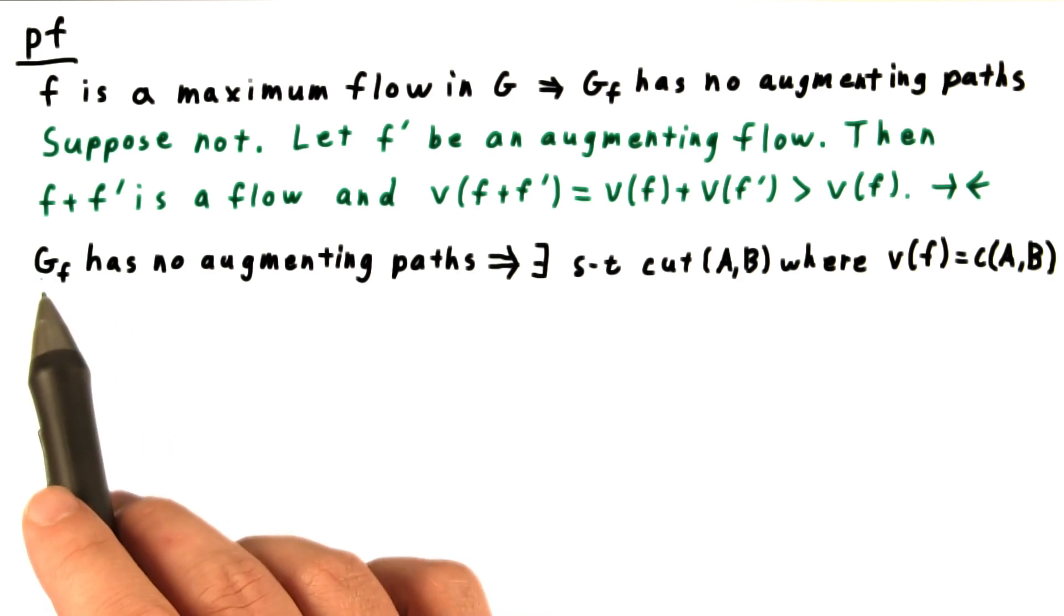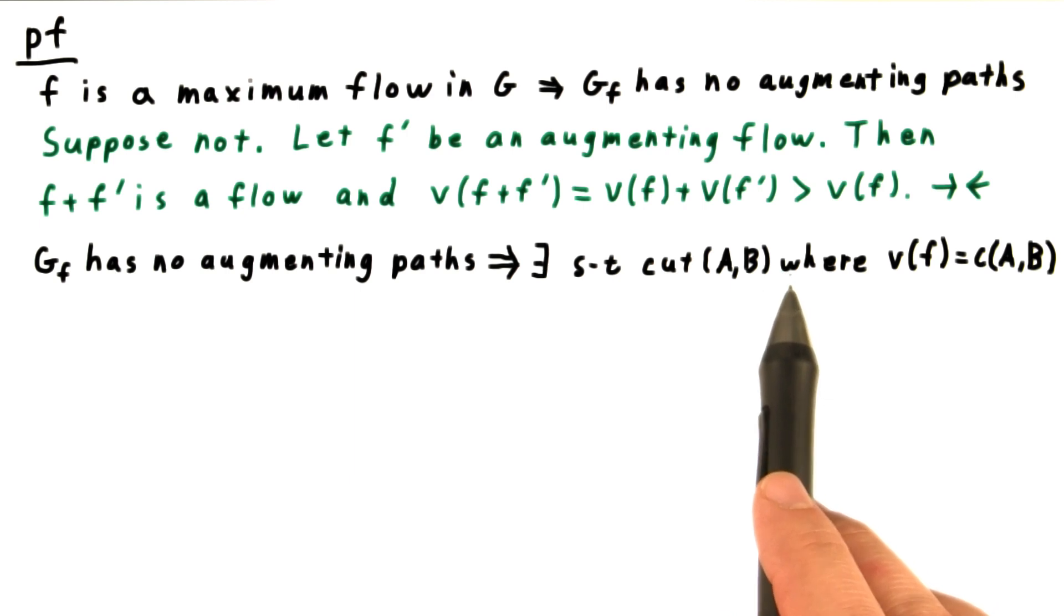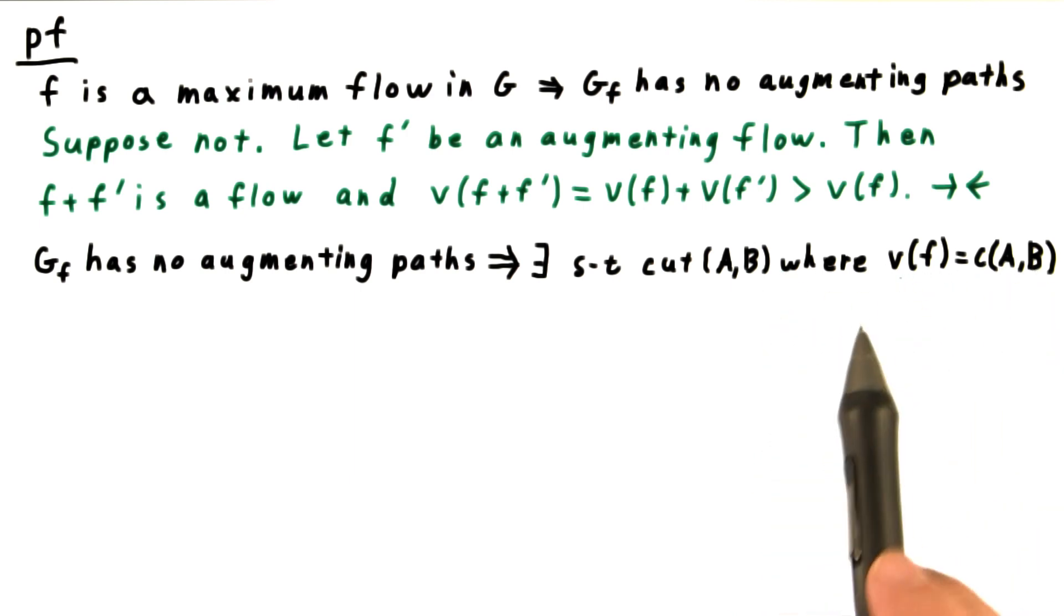Next, we show that the fact that the residual network has no augmenting paths implies that there's an ST cut whose capacity is the same as the value of the flow. This is the real heart of the theorem.